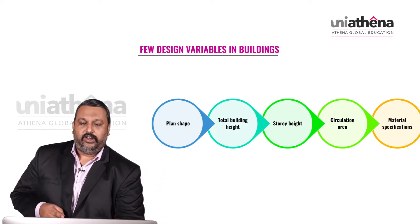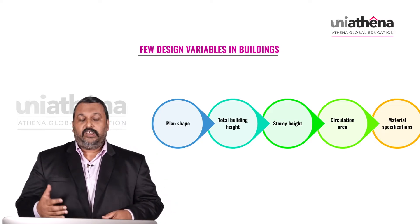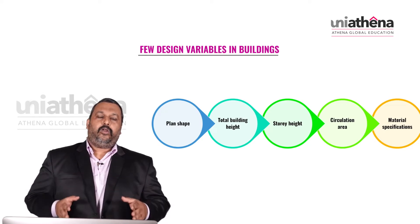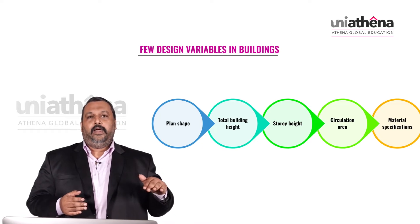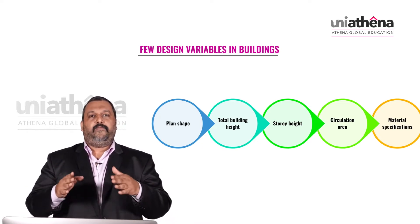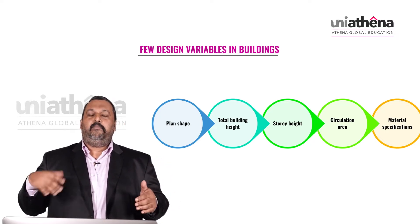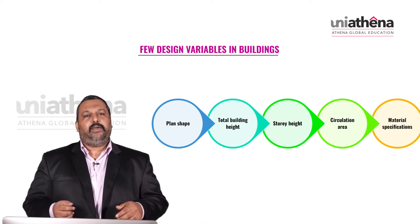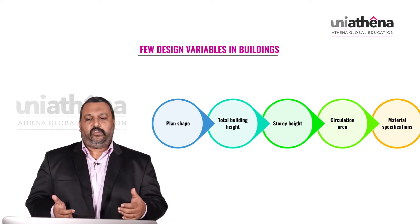Let us discuss about the design factors or design variables of the building. First is the plan shape. The more regular or aligned the shape of the plan, the lesser the cost is going to be. If you have a zigzag plan or an irregular shape, the cost is going to be automatically higher compared to a square or regular-shaped plan. So plan shape is one design variable which decides cost factors.